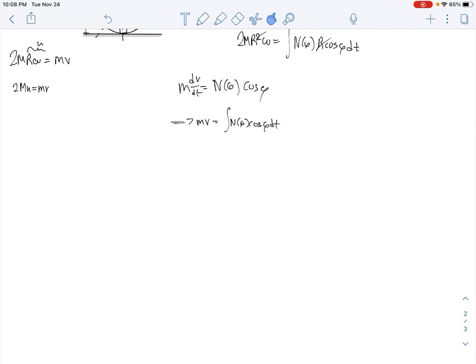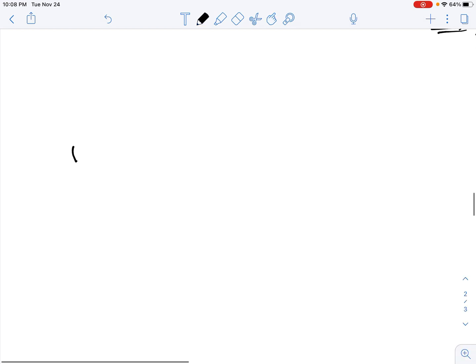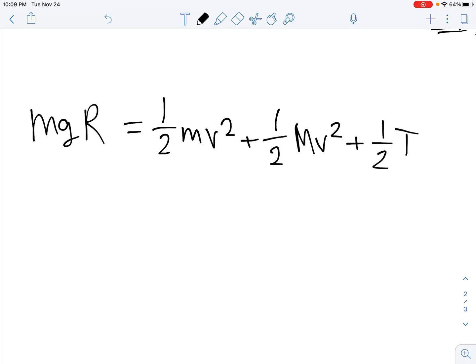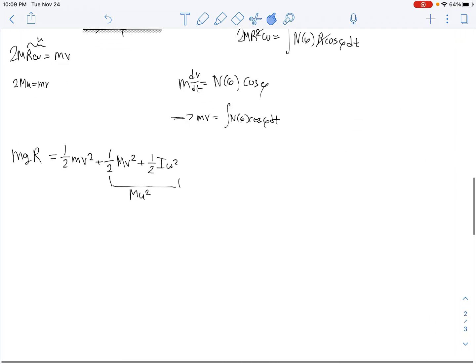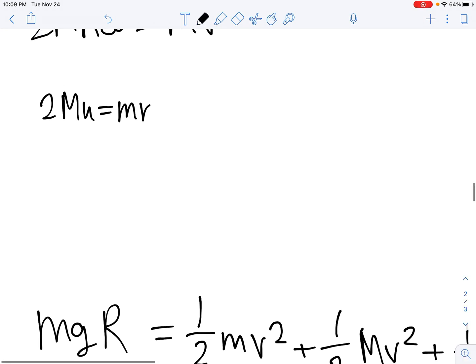So now it's at the bottom. We're going to conserve energy. The mass is initially at a height R, and we're going back to our initial frame of reference. So now we're no longer in the frame of the cylinder, we're back in the frame of the mass. We're going to write that mgR, which is the initial potential energy, converts entirely into kinetic energy of the smaller mass and the kinetic energy which includes the rotational and translational energy of the bigger cylinder.